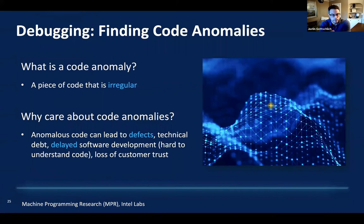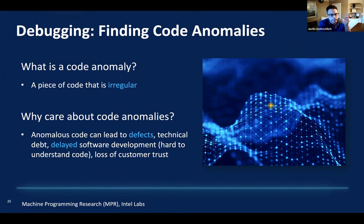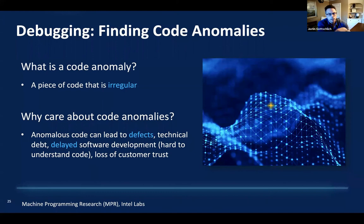That's why we might want to build machine programming systems targeting debugging. One of the areas we target, and the first system I'll talk about, is ControlFlag. Before we talk about ControlFlag, we need background on what a code anomaly is. A code anomaly is a piece of code that is irregular in some dimension — not necessarily a defect, simply something that is non-normal. It could be obfuscated code that's hard to understand, code that is going to lead to a defect, or an actual concrete defect.